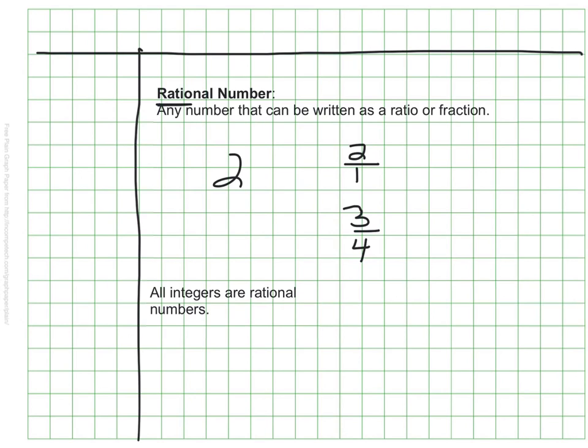So all integers are, by default, rational numbers. However, not all rational numbers are integers.